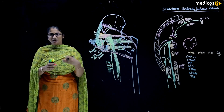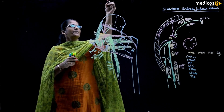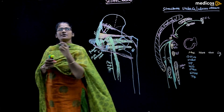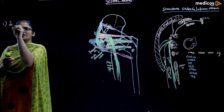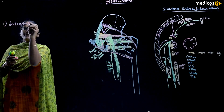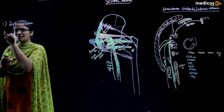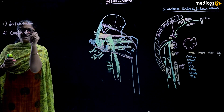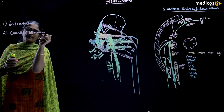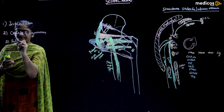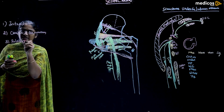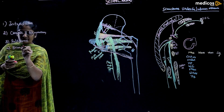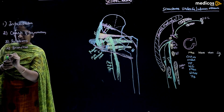Now we are going to the next session: the sciatic nerve. We are going to see the sciatic nerve under the heading introduction, course and termination, relations — meaning superficial and deep relations — branches, and finally the applied aspect.